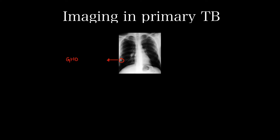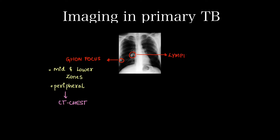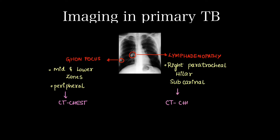What to look for in imaging: the Ghon's focus is more commonly found in mid and lower zones, in the peripheral aspect, and sometimes can be obscured, so do watch CT chest. The lymphadenopathy associated with it involves right paratracheal, hilar and subcarinal groups of lymph nodes, which are well visualized on contrast enhanced CT chest.